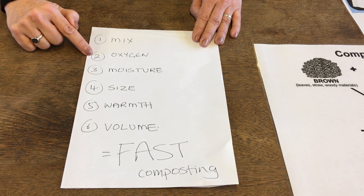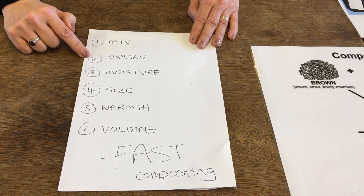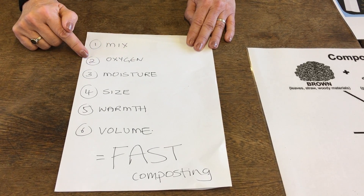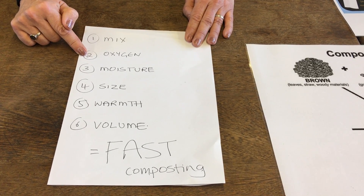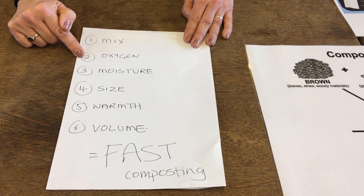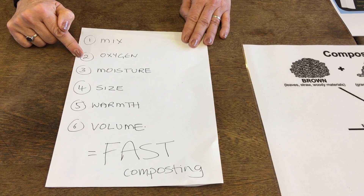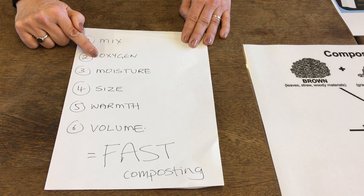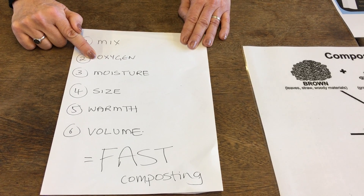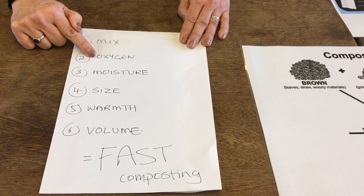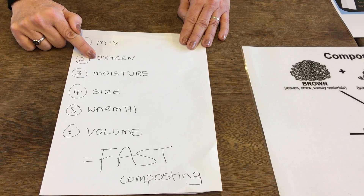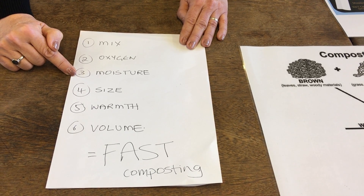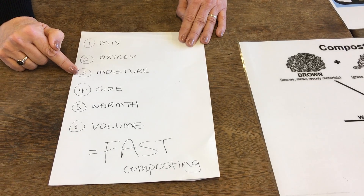Turning your compost regularly speeds up the process. For hot composting it should be done every two weeks, but cold compost also benefits from this — ideally once a month if you have time. Moisture is essential; all living things need water. Make sure it's moist but not soaking wet: if it's soaking wet there's no oxygen, and if it's completely dry the organisms can't work.